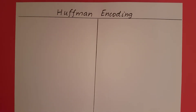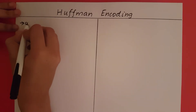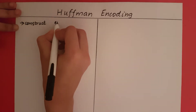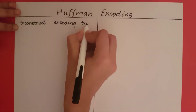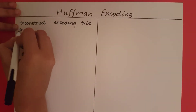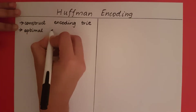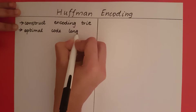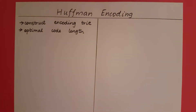Huffman encoding. The Huffman encoding algorithm is going to construct an encoding trie for a set of strings such that the strings are going to have codes of optimal length. So before we go into the algorithm itself, let us see what we mean by optimal code length and how we can achieve it. Let's see that using an example.